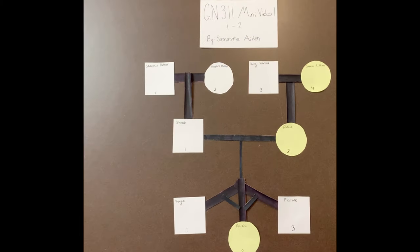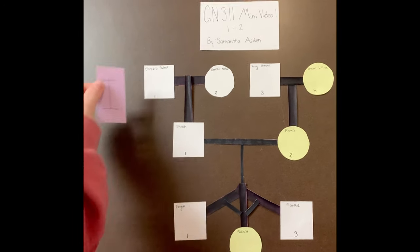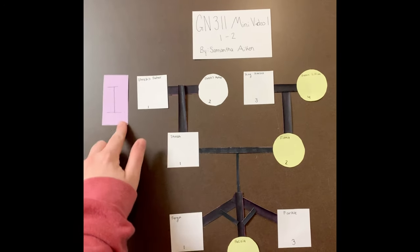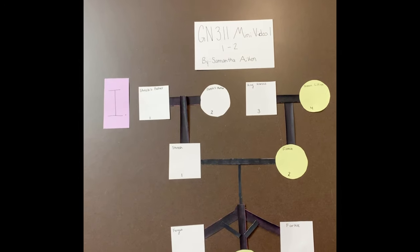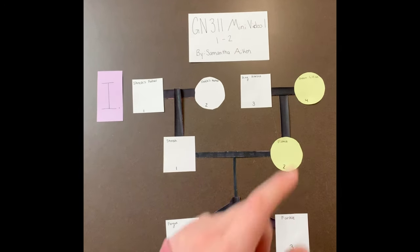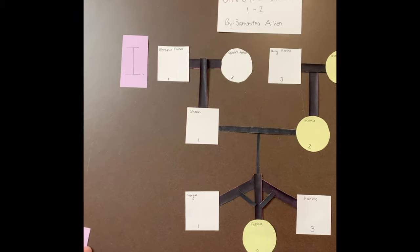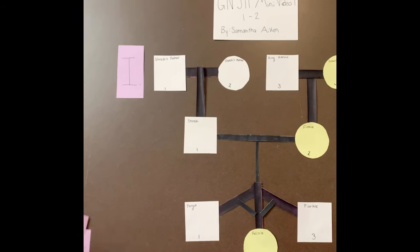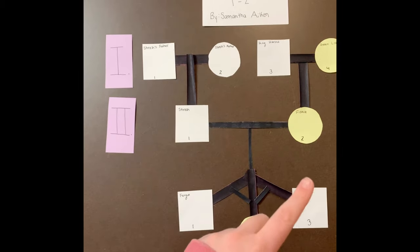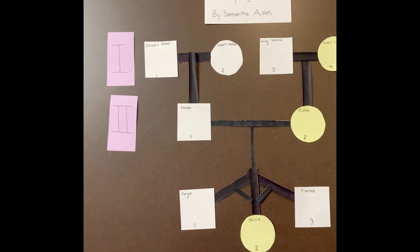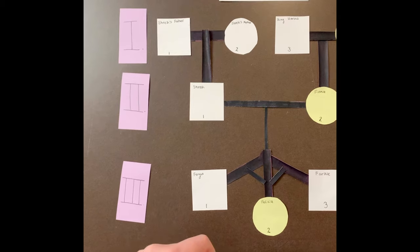Now we can go into actually looking at the pedigree itself. In generation one we have Shrek's father and Shrek's mother, who remain unnamed through the series, and then Fiona's parents, King Harold and Queen Lillian. As we move down to generation two, it's pretty straightforward because Shrek and Fiona are both only children.